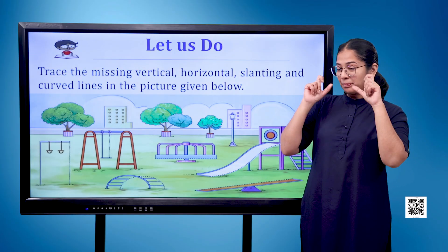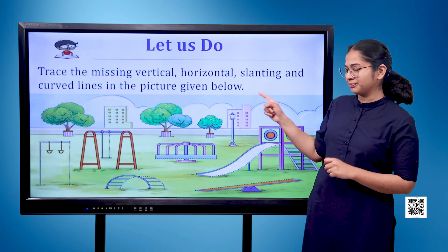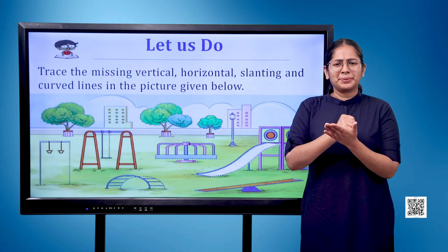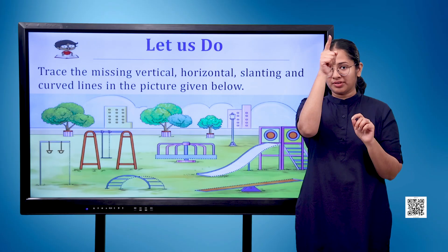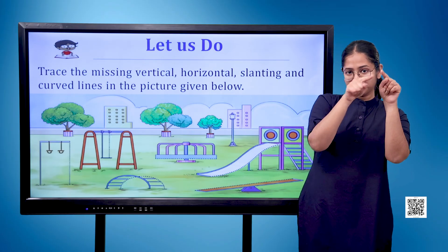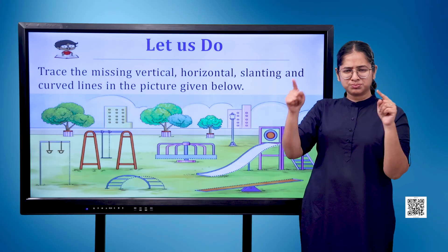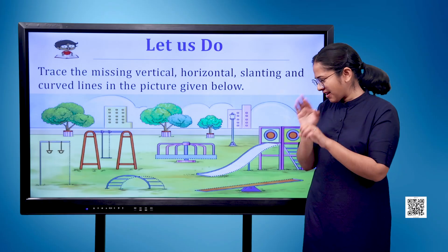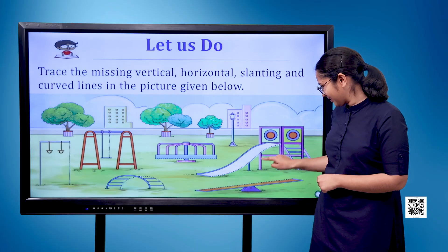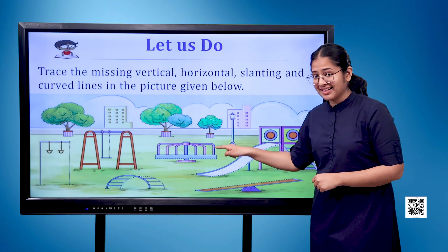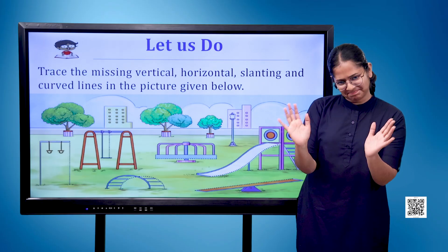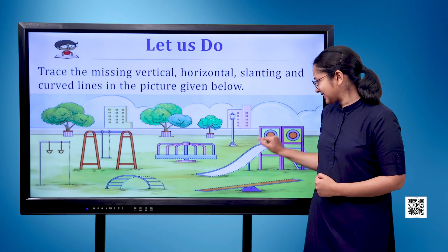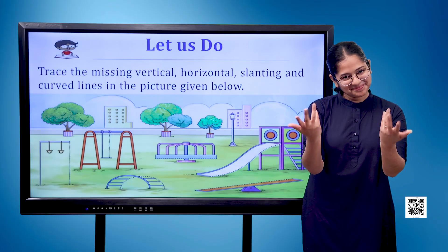Let us do: Trace the missing vertical, horizontal, slanting, and curved lines in the picture given here. Here we see the image of a children's park having a swing, seesaw, etc.